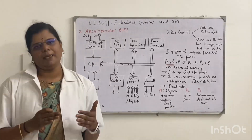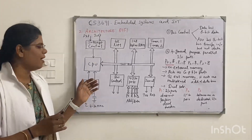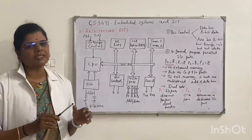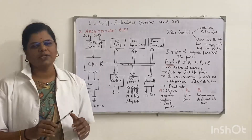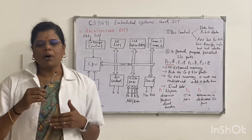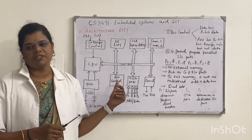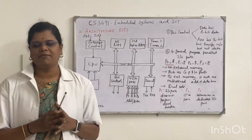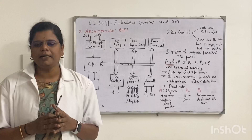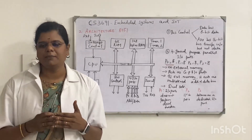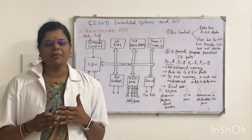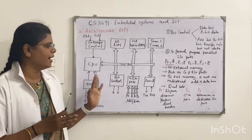In the CPU we have registers: register A, register B, and also the program status word. We have a 16-bit program counter, which contains the data pointer and also the stack pointer. The data pointer, known as DPTR, is the only user-accessible 16-bit register. The stack pointer stores the memory address of the last data element added to the stack.